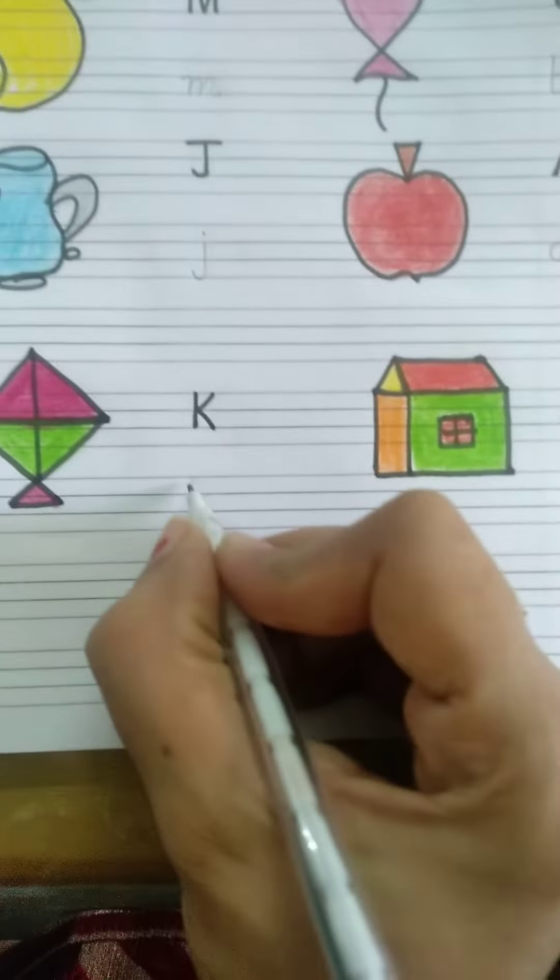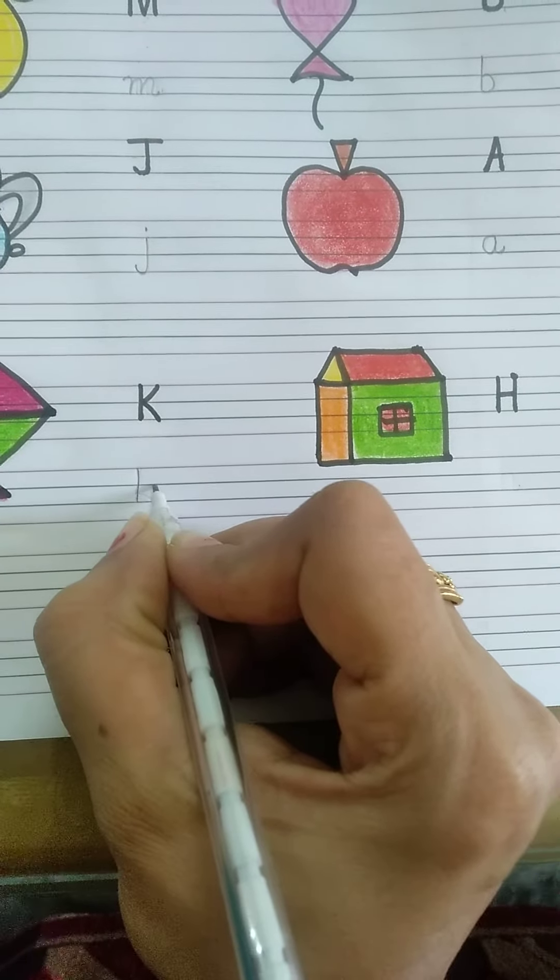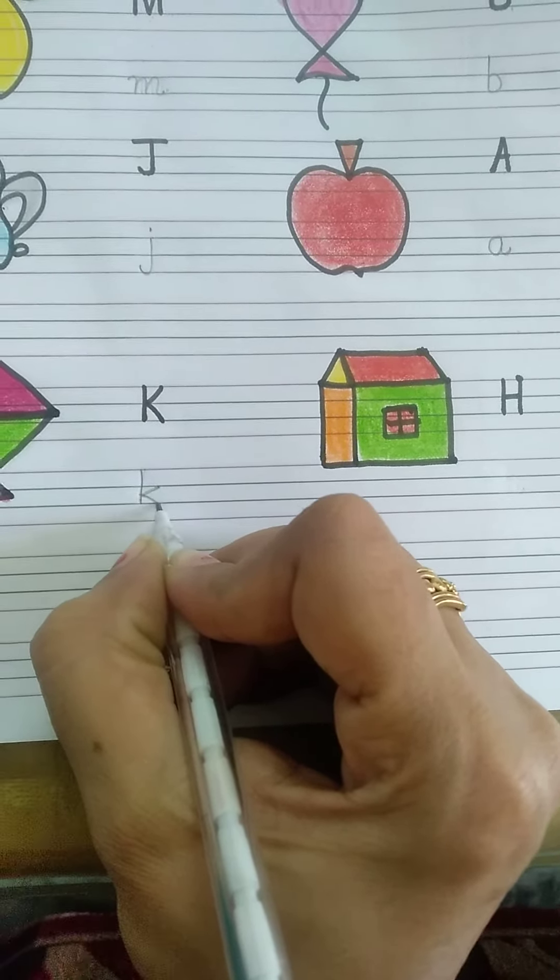K. It is capital K. We will write here small letter. In these middle two rows, we will make slanting line in, slanting line out.